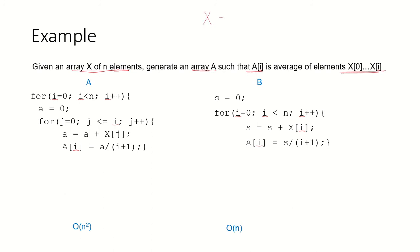So suppose if we have an array X of 5 elements, we have to generate another array A where each element is the average of the elements X[0] to X[i].